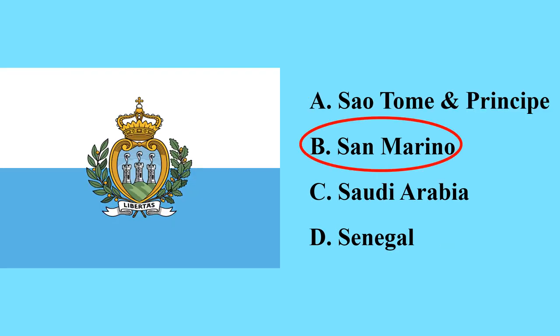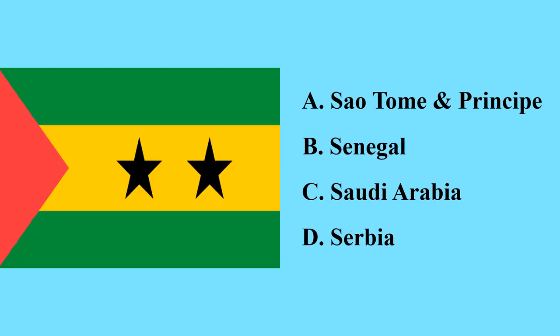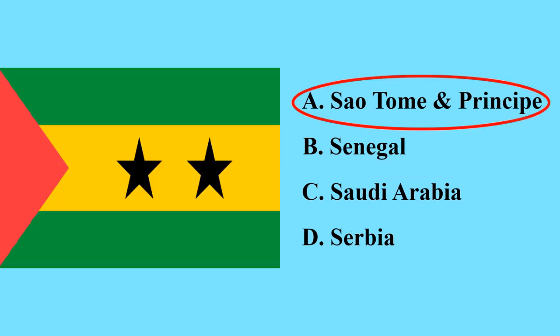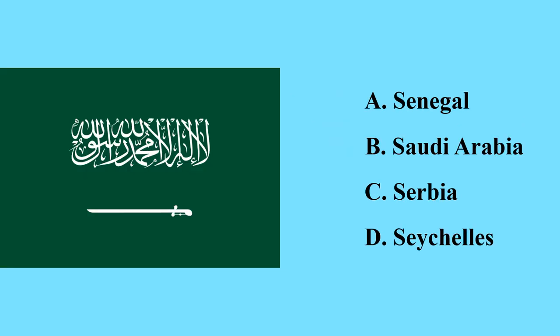This is a flag of San Marino — a small country in Europe surrounded by Italy. This is the flag of São Tomé and Príncipe — an island in the Atlantic Ocean that belongs to Africa.